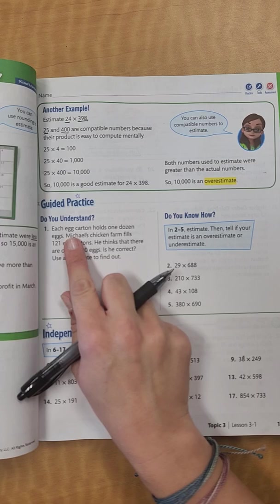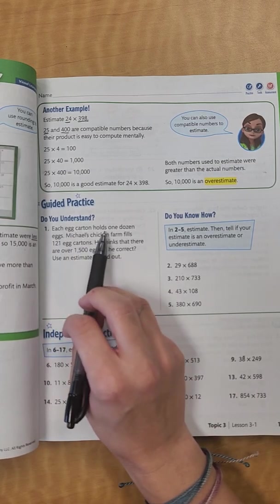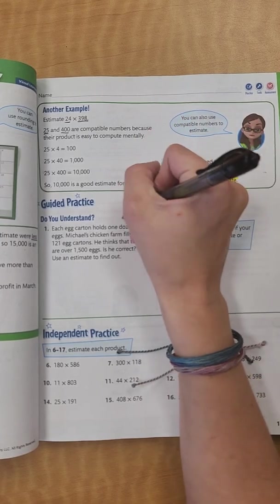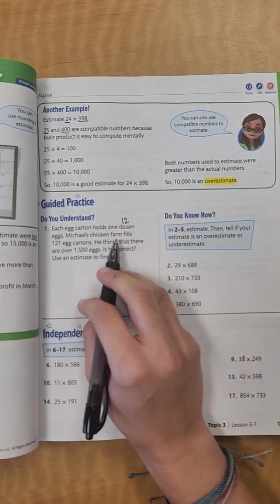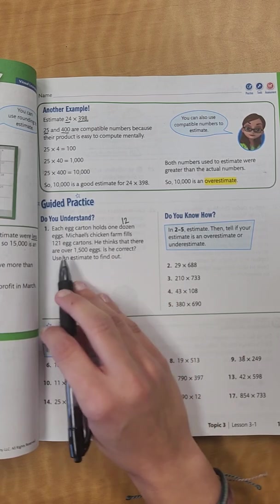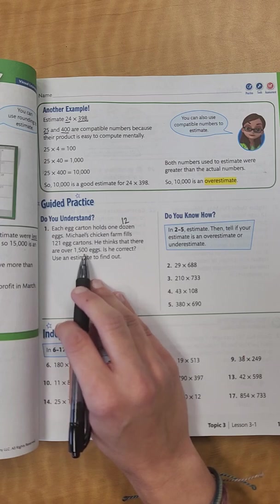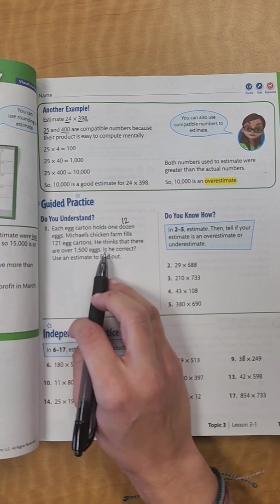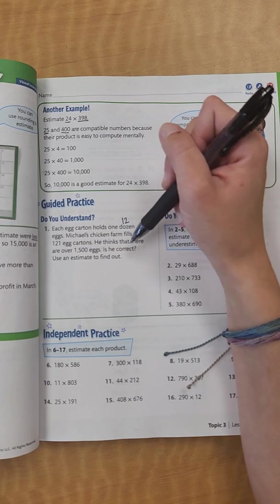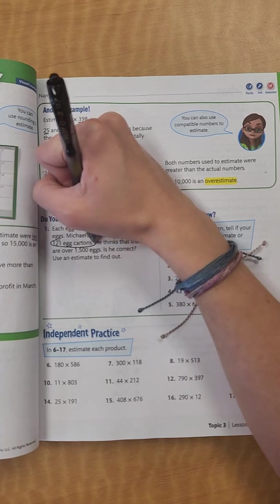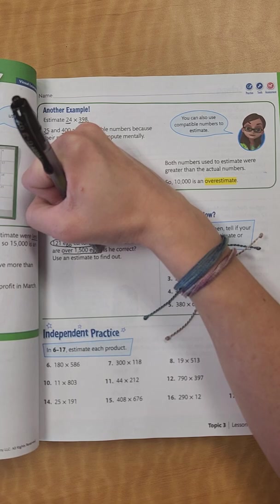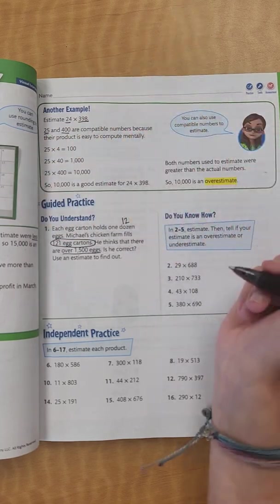Okay, so let's go down to number one. It says each egg carton holds one dozen eggs. Remember, one dozen is how many? Twelve, good. Michael's Chicken Farm fills 121 egg cartons. He thinks that there are over 1,500 eggs. Is he correct? So if we look at this, we have 121 egg cartons, and he thinks that there are over 1,500 eggs. We need to figure out if he's correct.